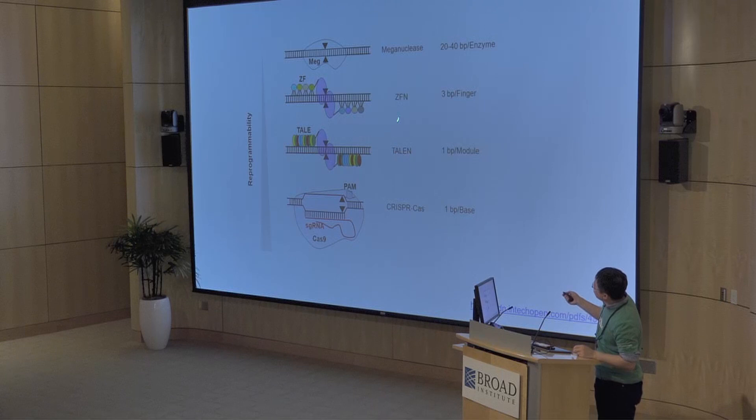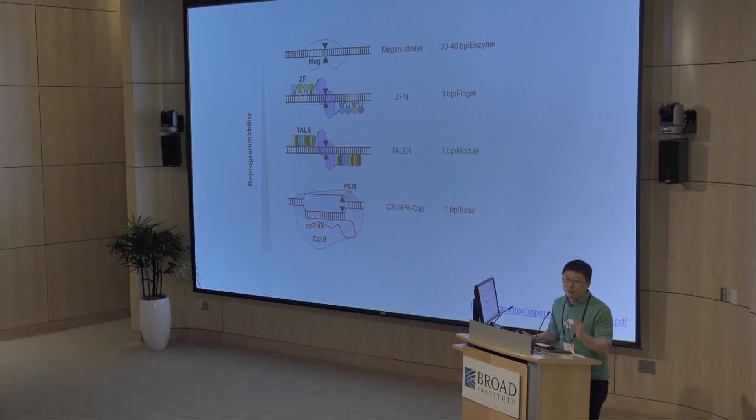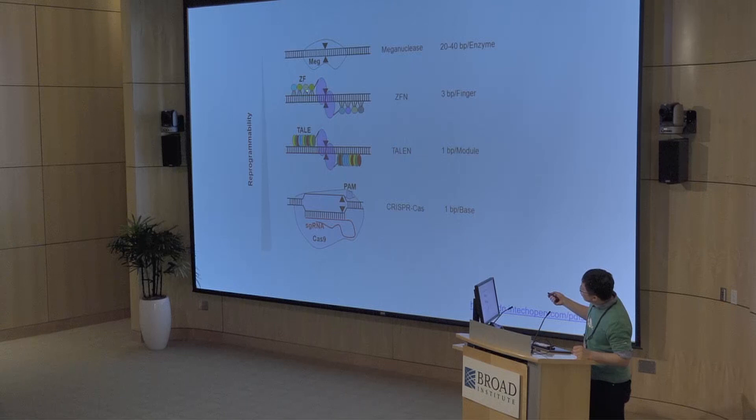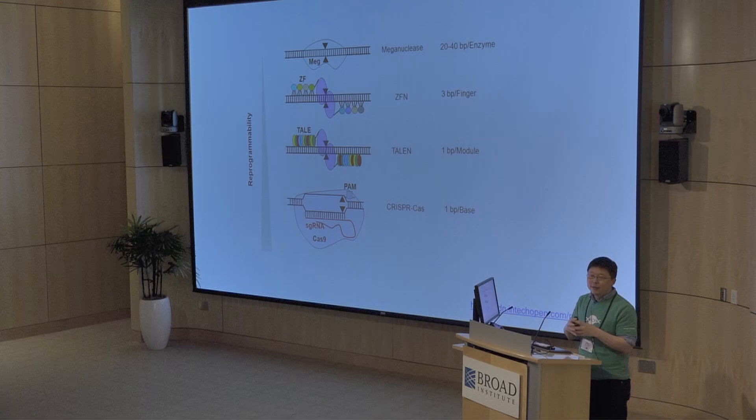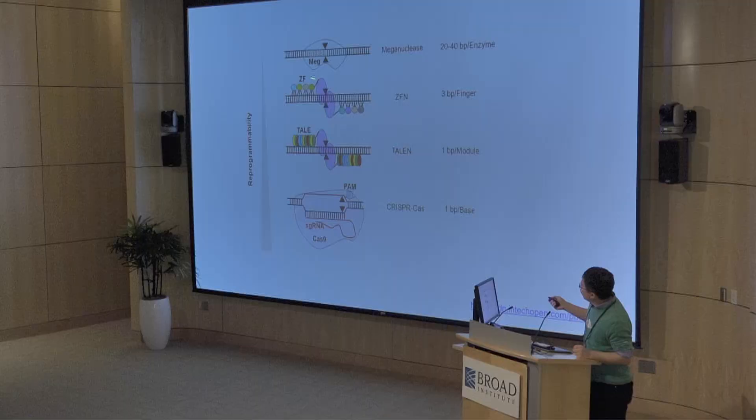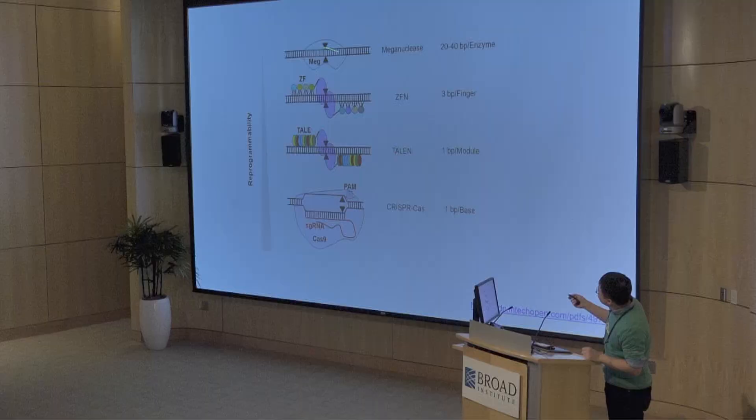To solve the challenge of reprogramming meganucleases, zinc finger nucleases became another platform. These zinc finger proteins are modular — each finger module recognizes three DNA bases — and the idea, at least on paper, is that you can chain them together to form an array and recognize a long stretch of DNA. Unfortunately, that modularity was not as predicted: when you put two fingers next to each other, they can affect each other's activity, so the sum of two fingers is not necessarily one plus one equals two. Nevertheless, zinc fingers are much easier to reprogram than meganucleases and have been developed to edit a number of different genes.